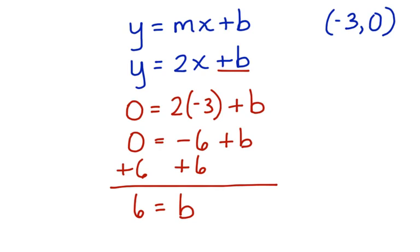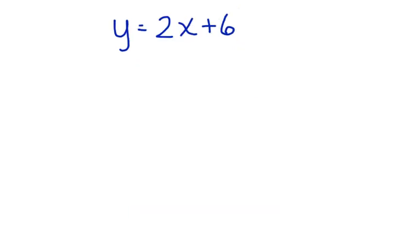Now let's go back to our equation in slope-intercept form and substitute in all the values that we know. y equals 2x plus 6. Here's the equation for our line.